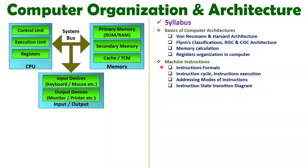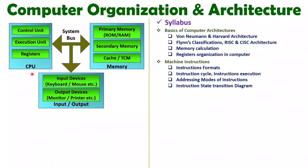After that I have covered machine instructions and how instructions are executed inside the CPU. For that you should understand how the instruction cycle works, how instruction execution happens, how addressing modes are used, and how the instruction state transition diagram is structured for any computer. All those basics are covered along with examples in the second unit.